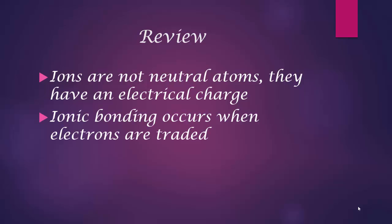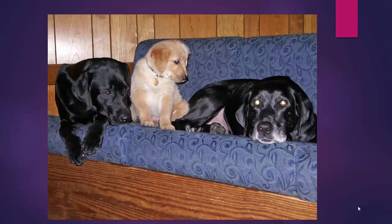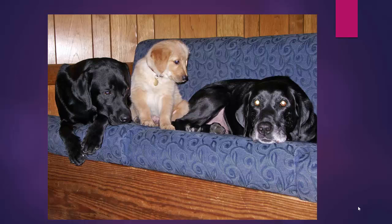Ions are not neutral atoms. They have an electrical charge attached to them. Because opposites attract, ionic bonding occurs when electrons are traded. And covalent bonding occurs when electrons are shared. So those are the basics of bonding. In the next lecture, we're going to discuss what happens when representative elements ionically bond.